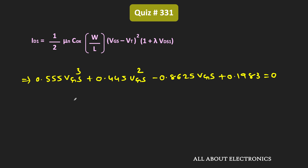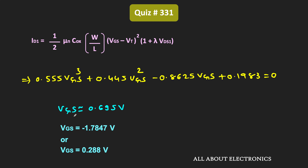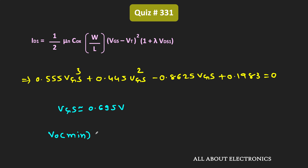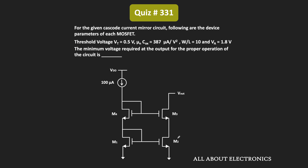Solving this cubic equation gives three roots. The first root is Vgs = 0.695V. The second value of Vgs is negative, and the third value is less than Vt. Therefore, the physically meaningful value is Vgs = 0.695V. From this, the minimum required output voltage is 2 × Vgs − Vt = 2 × 0.695 − 0.5 = 0.89V. So for the given cascode current mirror circuit, the minimum required output voltage for proper operation is 0.89V.